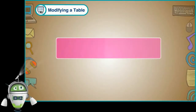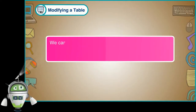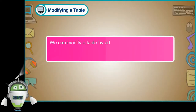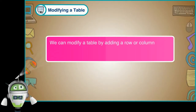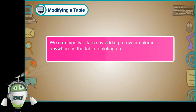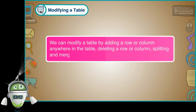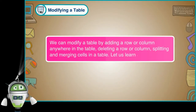Modifying a Table. We can modify a table by adding a row or column anywhere in the table, deleting a row or column, and splitting and merging cells in a table. Let us learn about these.